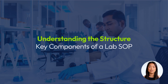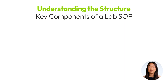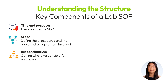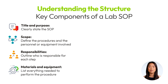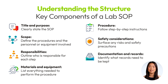Now let's break down the structure of a typical lab SOP. Most SOPs include the following key components: first, a clearly outlined title and purpose; second, a scope which defines the procedures and the personnel and/or equipment involved; third, an outline of who is responsible for each step; fourth, a list of everything from materials to equipment needed to perform the procedure; fifth, step-by-step instructions followed by an outline of any risks and safety precautions; and finally, documentation and records that need to be kept. Having these sections helps ensure that the SOP is comprehensive and easy to follow.